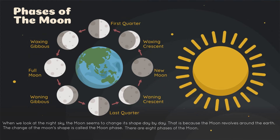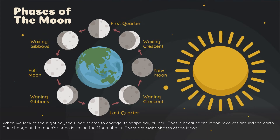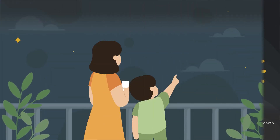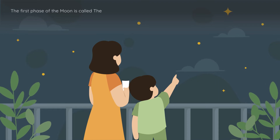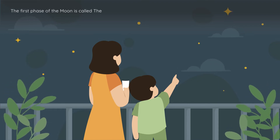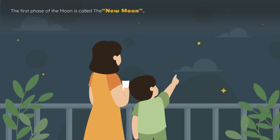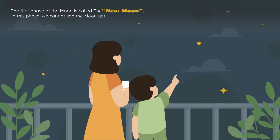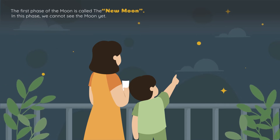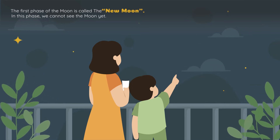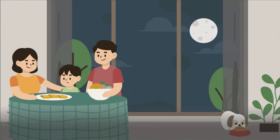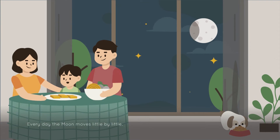There are eight phases of the moon. The first phase of the moon is called the new moon. In this phase, we cannot see the moon yet.